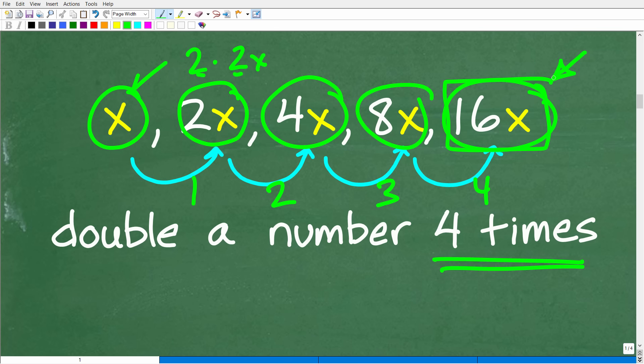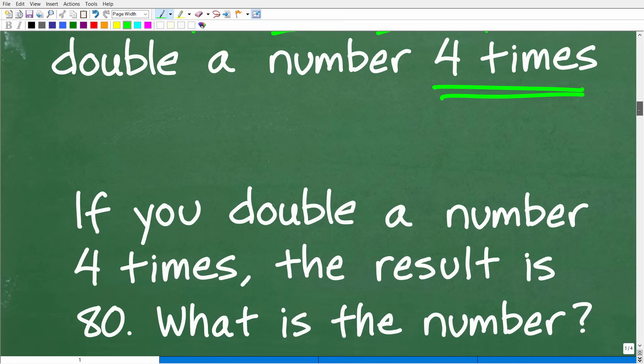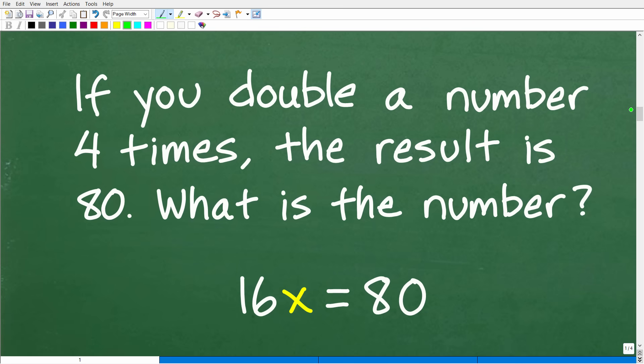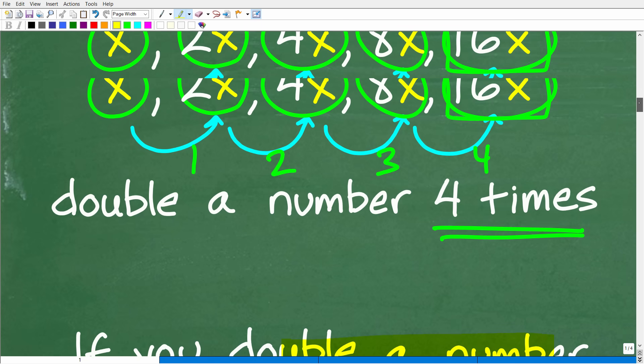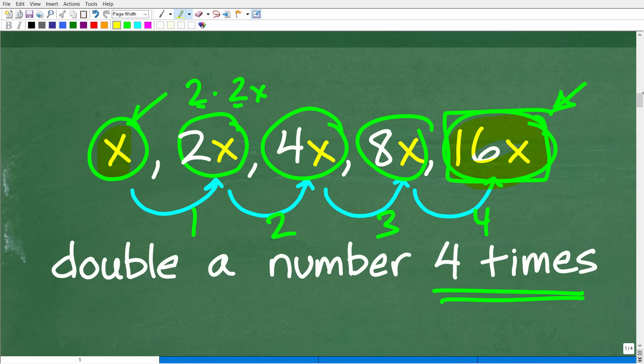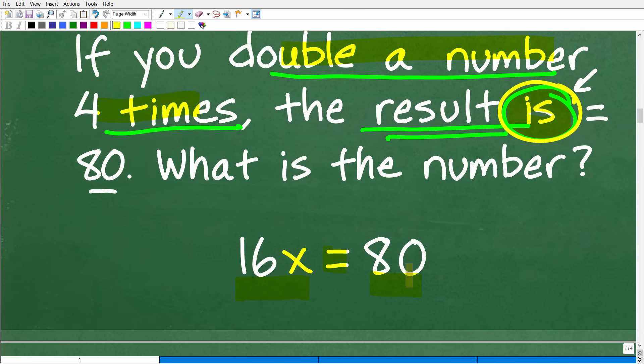Now, this is not going to do us any good unless, again, we can build an equation. And the only way we're going to be able to build an equation is to go back to the problem. And the problem states the following, right? If you double a number four times, the result, okay, is. And the magic word here is this word right here. This is an awesome word. In algebraic word problems, is is always the equal sign, okay? So if we double a number four times, the result is. So this is going to be translated as equal sign is equal to 80, okay? So we double this number, okay, X, four times, we got 16X right here, right? So this is what we got when we doubled this number four times, 16X. And the result is 80.